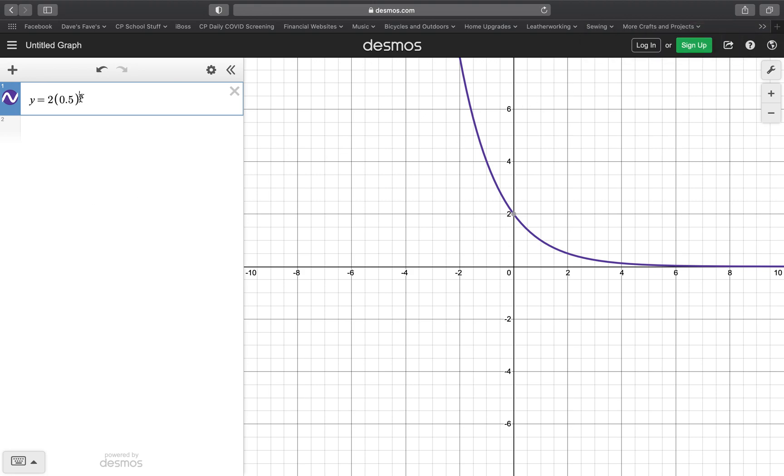If we put a negative on the exponent, you'll see that we reflect over the y-axis. And our decay basically flips over to growth. So that's what happens with changing the a value and the exponent into negatives.